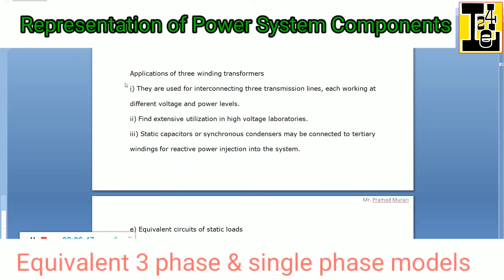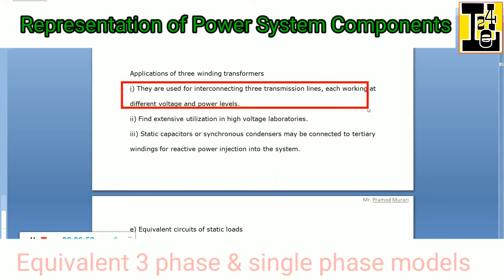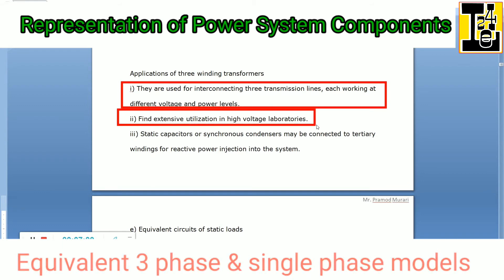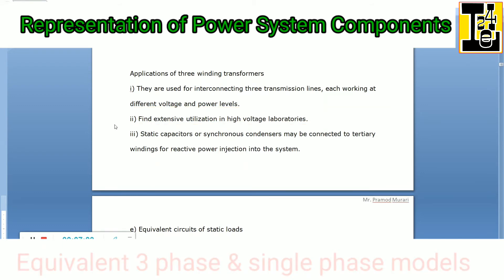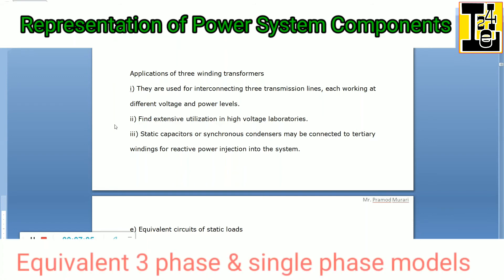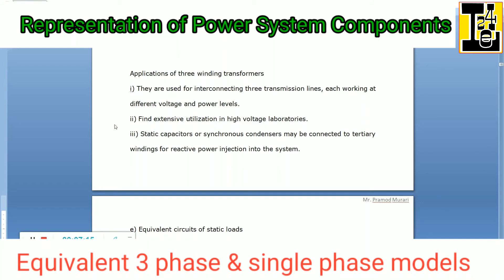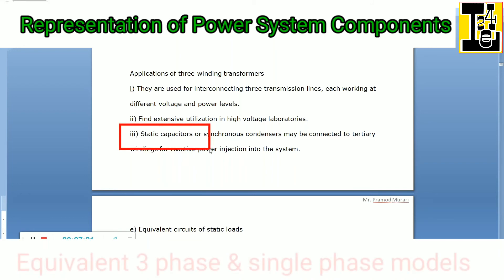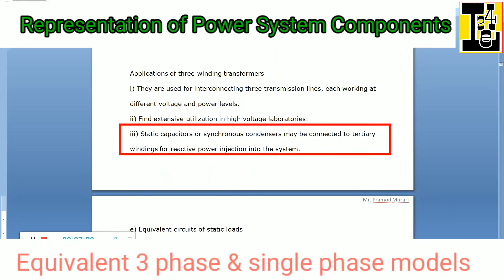Let us go through the applications of the three-winding transformer. They are used for interconnecting transmission lines each working at different voltage and power levels. They find extensive utilization in high voltage laboratories. Three-winding transformers may also be used to connect the tertiary windings for reactive power injection into the system; static capacitors or a synchronous condenser may be connected to the tertiary windings for this purpose.